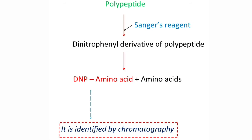This dinitrophenyl derivative of the polypeptide is then subjected to hydrolysis, which leads to formation of a dinitrophenyl amino acid plus the remaining amino acids. The reagent that was bound to the N terminal amino acid is separated during hydrolysis, and this DNP amino acid is identified by chromatography using a standard amino acid.